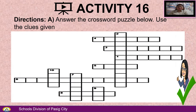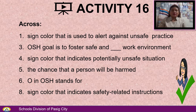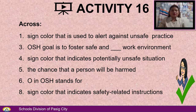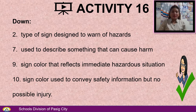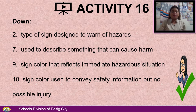Per activity number 16, letter A: Answer the crossword puzzle below using the clues given. Across: Number 1 — sign color used to alert against unsafe practice; Number 3 — OSH goal is to foster safe and blank work environment; Number 4 — sign color that indicates potentially unsafe situation; Number 5 — the chance that a person will be harmed; Number 6 — O in OSH stands for; Number 8 — sign color that indicates safety-related instructions. Down: Number 2 — type of sign designed to warn of hazards; Number 7 — term that describes something that can cause harm; Number 9 — sign color that reflects immediate hazardous situation; Number 10 — sign color used to convey safety information but no possible injury.